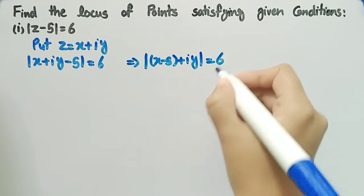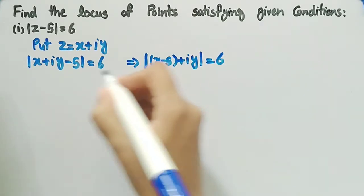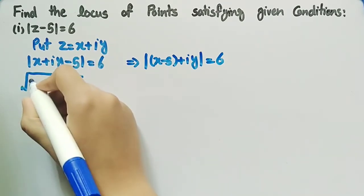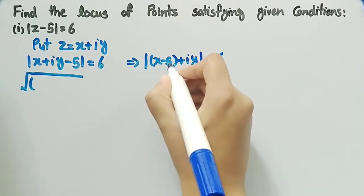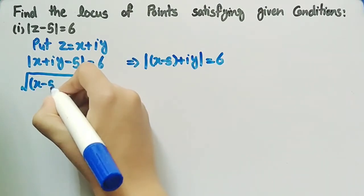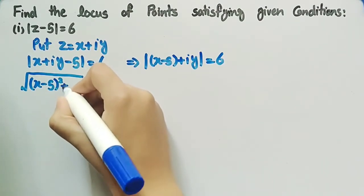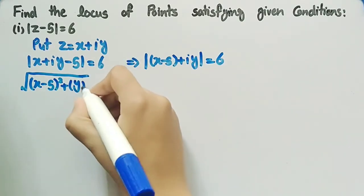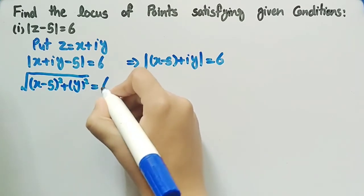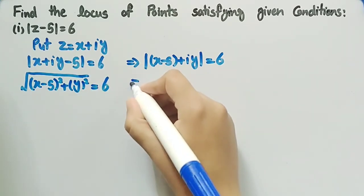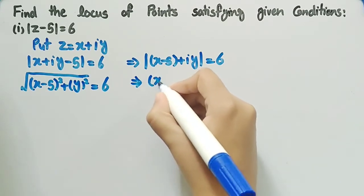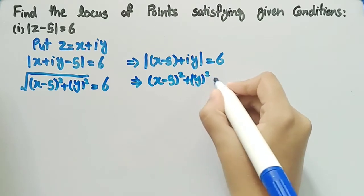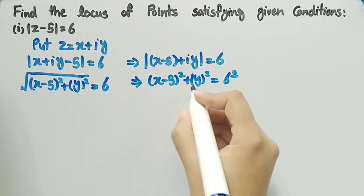Now by taking the modulus of this term we get square root of the square of the real part, which is x minus 5, plus the square of the imaginary part, which is y squared, equal to 6. Squaring both sides we get x minus 5 squared plus y squared equal to 6 squared.